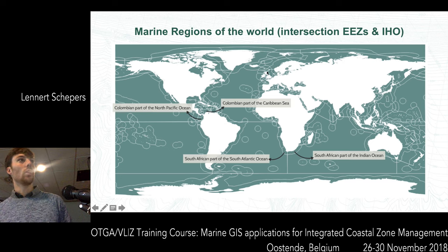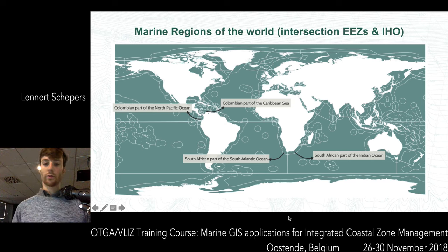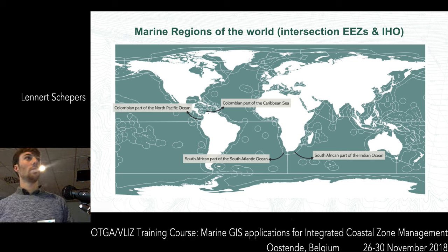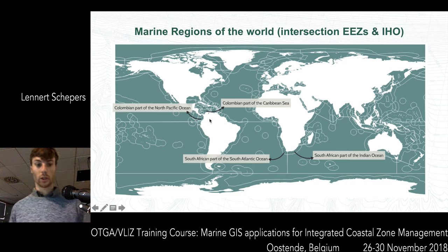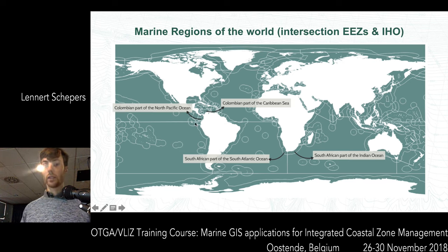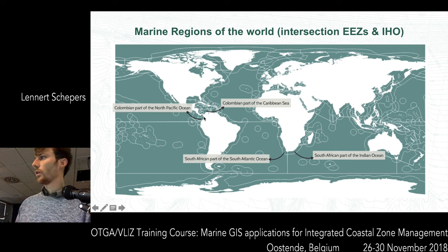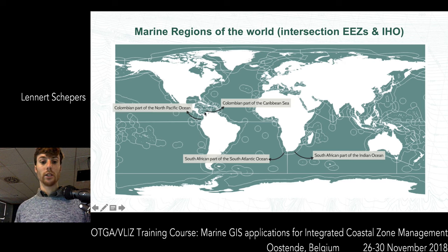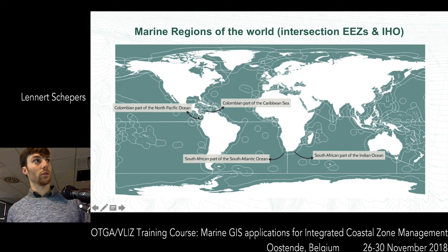Here you have the world map of the Exclusive Economic Zones. We also make derived products - for example, the intersection between the Exclusive Economic Zones and the IHO sea areas. So for example, if you have the Exclusive Economic Zone of Colombia, by doing this intersection we get the Colombian part of the Caribbean Sea and the Colombian part of the North Pacific Ocean. This is important because the first goal of this database was as a geographical backbone for biogeographical databases and species occurrences. It's very possible that species in the Colombian part of the Caribbean Sea are not occurring in the Pacific Ocean, so we make all these products.